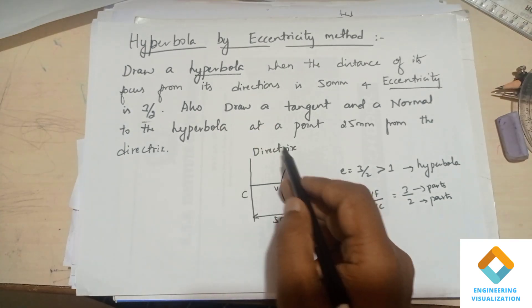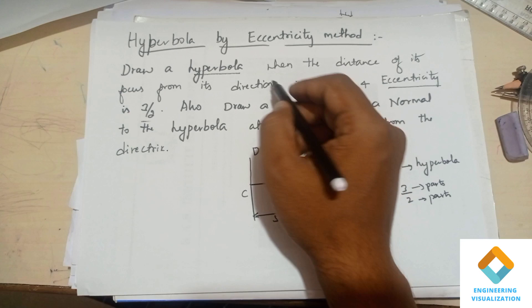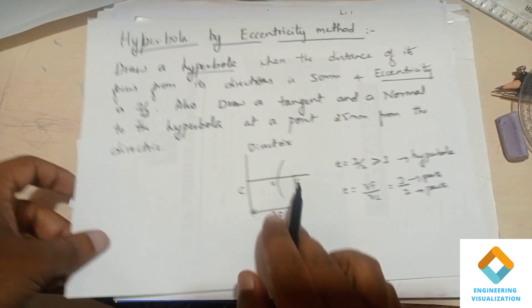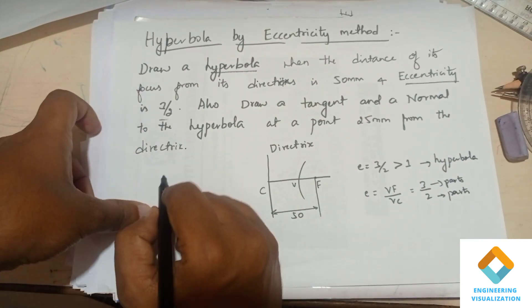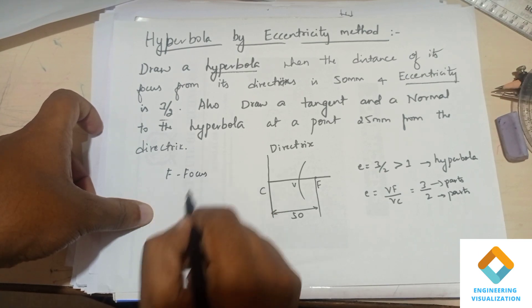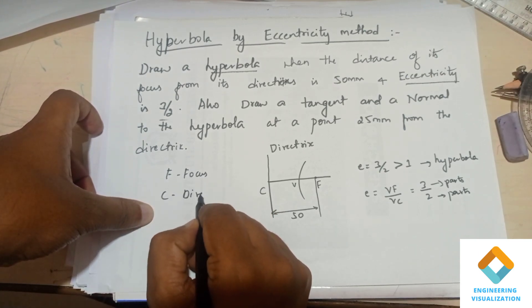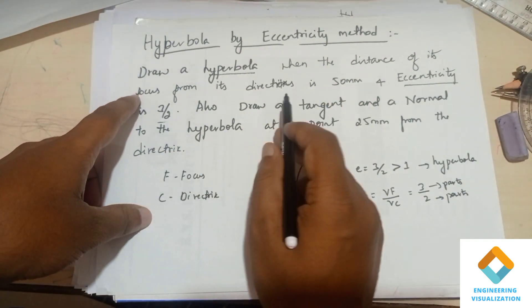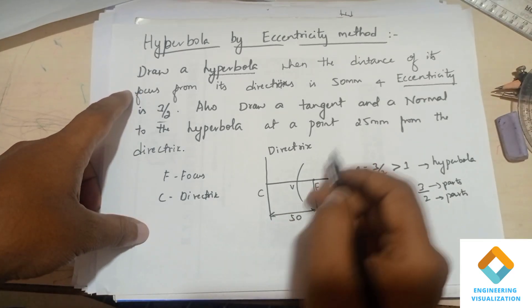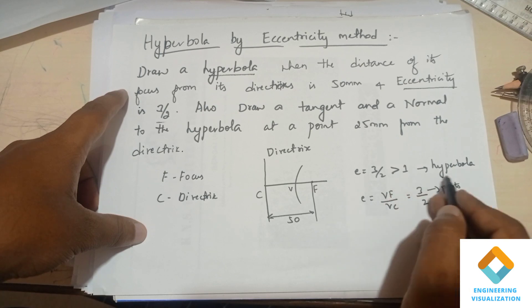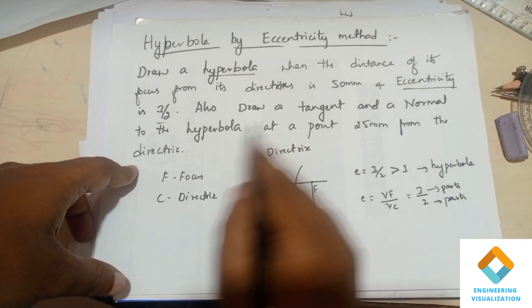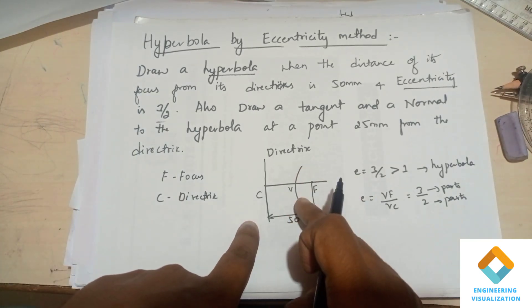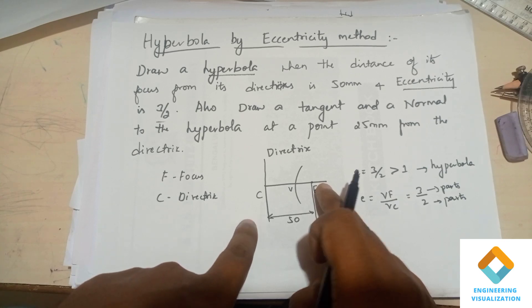Here we draw one line and mark points V, C, and F. The distance from the curve or hyperbola to the focus is called the focal distance, and the C point is called the directrix. The distance given in the question is 50 mm from the focus point. The eccentricity is 3/2, which is greater than one, and greater than one means it is a hyperbola.